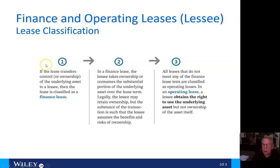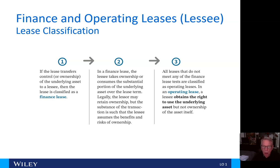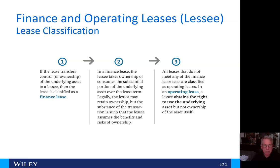If the lease transfers control or ownership of the underlying asset to a lessee, then it is classified as a finance lease. In a finance lease, the lessee takes ownership or consumes a substantial portion of the underlying asset over the lease term. Legally the lessor may retain ownership, but the substance is that the lessee assumes the benefits and risks of ownership. All leases that do not meet any finance lease tests are classified as operating leases, where the lessee obtains the right to use the underlying asset but not ownership.